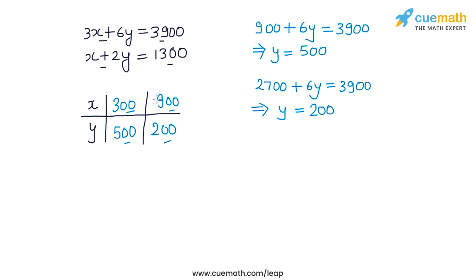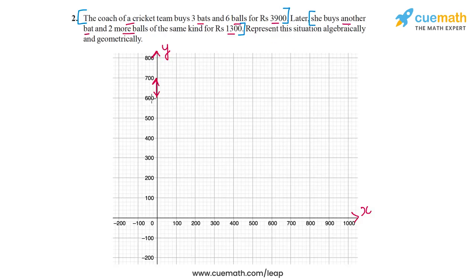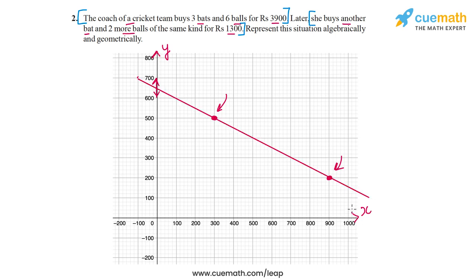Using these two solutions, let's plot the solution line for the first equation. We got one solution at (300, 500) and another at (900, 200). Drawing a line through these two points, this line represents the first equation: 3x + 6y = 3900.